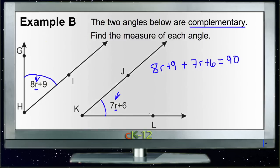Then we can just combine like terms. I'll do that in a different color so that they show up a little better for you. So we combine like terms. 8R plus 7R gives us 15R, and then 9 plus 6 gives us 15. We know that that equals 90 degrees.